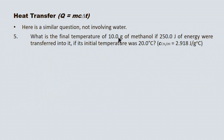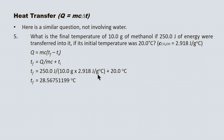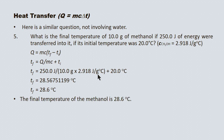Here's a similar question, however we've moved away from water and are dealing with methanol. Find the final temperature of 10.0 grams of methanol if 250.0 joules of energy are transferred into it, with an initial temperature of 20.0 degrees Celsius. The specific heat capacity of methanol is given as 2.918 joules per gram degrees Celsius — significantly lower than for water. We write our equation, rearrange, and substitute. Since Q is already in joules and mass is in grams, no conversion factors are needed. Our raw value is 28.567... degrees Celsius; applying sig digs, the final temperature is 28.6 degrees Celsius.